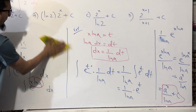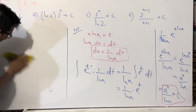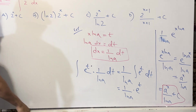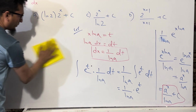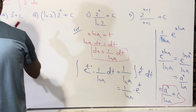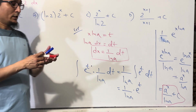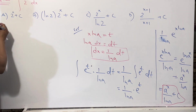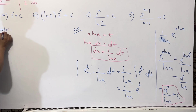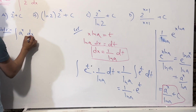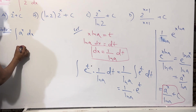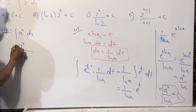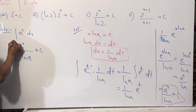This is very important. If you have 2^x, 3^x, or 4^x — it doesn't matter. The integration of a^x dx is always equal to a^x divided by ln a, plus C. Just copy-paste the base with the same power, divide by ln a, and add C. This is the formula.